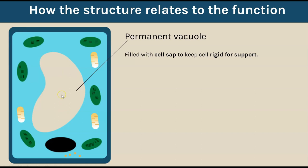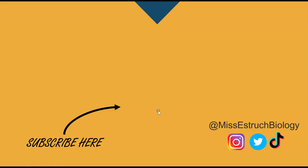The permanent vacuole is filled with cell sap - a liquid - and that liquid helps to support the cell and make it really rigid. You have that liquid in the center pushing outwards to make the cell really rigid.